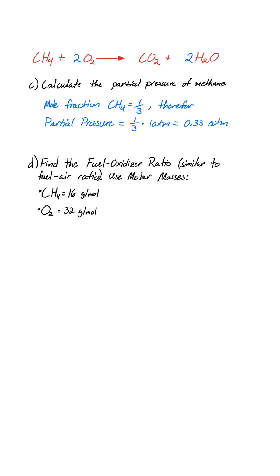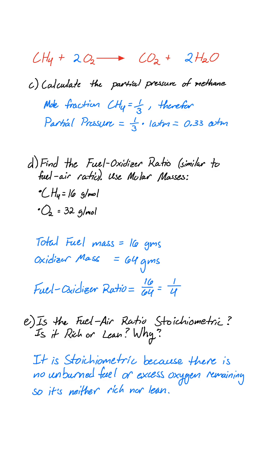Fuel mass equals moles of fuel times molar mass. One mole of methane times 16 grams per mole equals 16 grams. Oxidizer mass equals two moles of oxygen times 32 grams per mole equals 64 grams. Fuel oxidizer mass ratio equals 16 over 64 equals 1 over 4 equals 0.25.